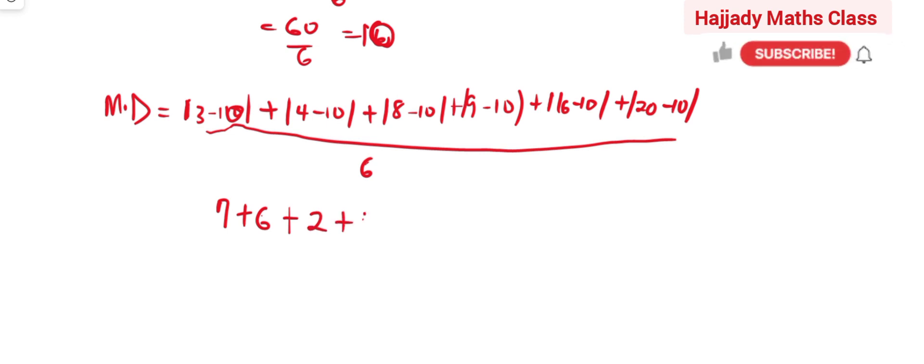Plus 1, plus 6, plus 10, all over 6. And this is going to give us 7 plus this is 13, 15, 16,